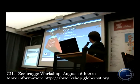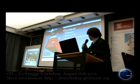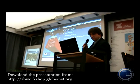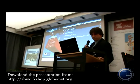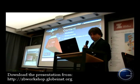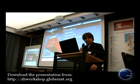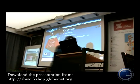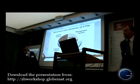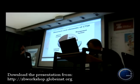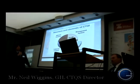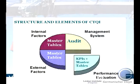We're looking at the structure and elements of... just right-click on the bottom right corner, forward slide on the right hand. Thanks very much, Kieran. So, the structure and elements of CTQI is broken down into four parts: the KPIs and master tables for performance evaluation, master tables for external factors, master tables for internal factors, and the management system.